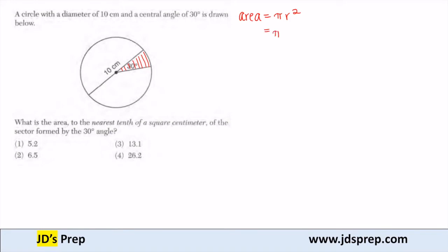So it's pi. Now my radius, what's given here is my diameter. It says that my diameter is 10 centimeters. Well, if we remember, the radius is half of my diameter. So if my diameter is 10, my radius is 5.